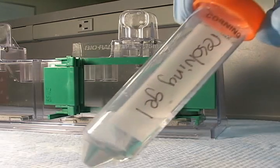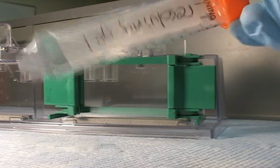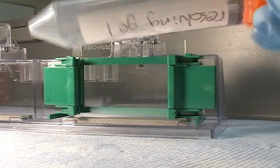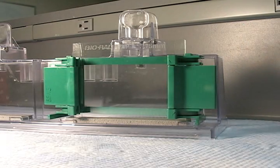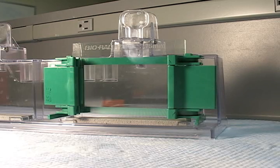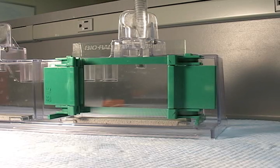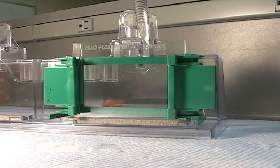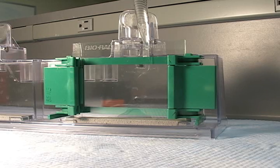I've just added my APS and Temid to this tube. I'm going to mix gently and then load the ready-to-polymerize acrylamide solution in between the glass plates. I want to do this relatively quickly. I don't want to give the gel time to form in the tube.